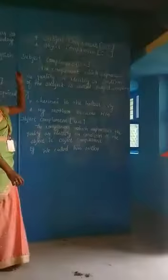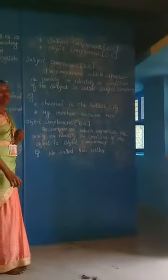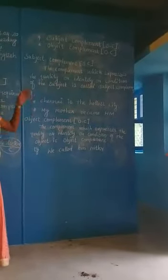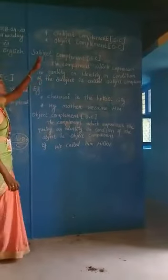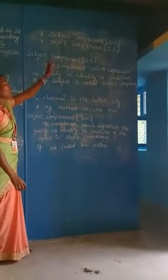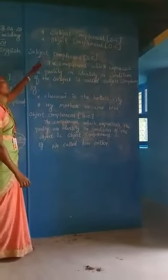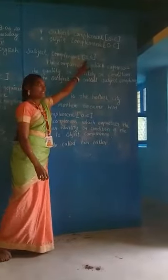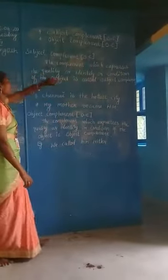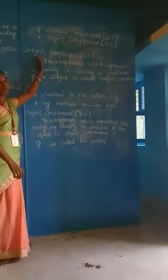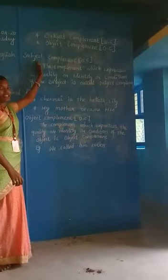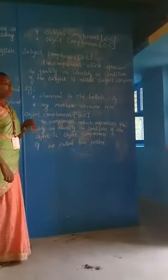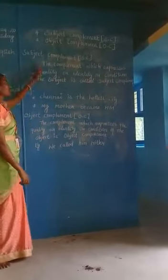There are two types of complement. One is subject complement and another one is object complement. The complement symbol is C. We just put C — it's enough for your examination.